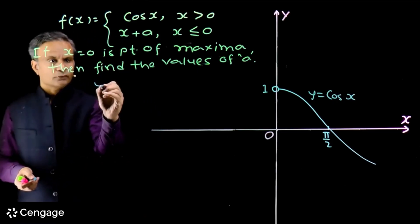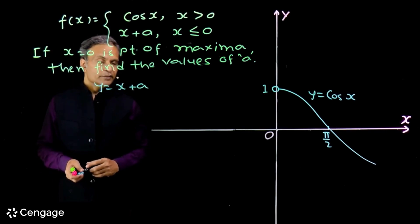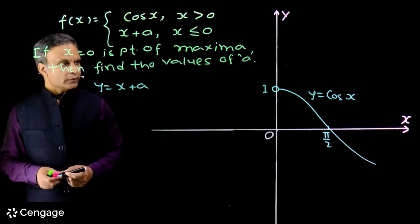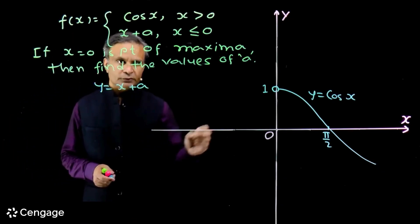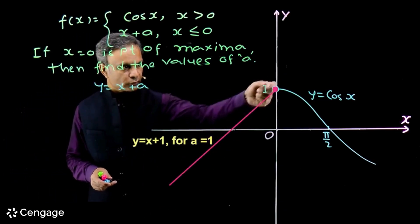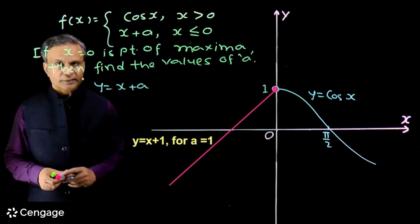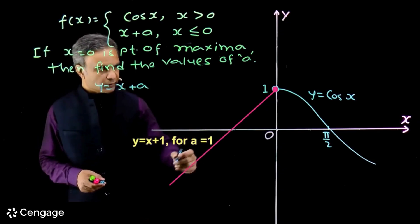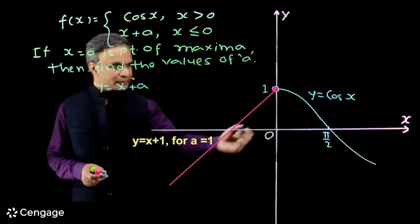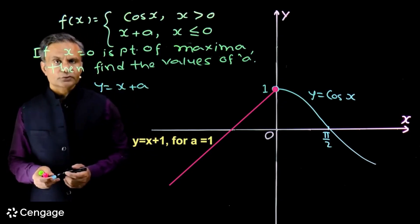For x ≤ 0 the graph is the straight line y = x + a. The y-intercept of this line depends on a. For x=0 to be a point of maxima, the line must meet the cos graph at the right level. When a=1, the line is y = x+1, which passes through (0,1), matching the limiting value of cos(x) at 0. Clearly x=0 is then a point of maxima.